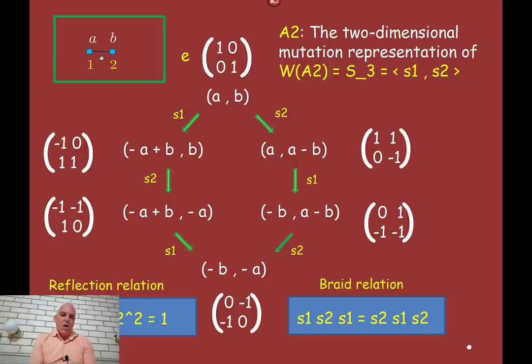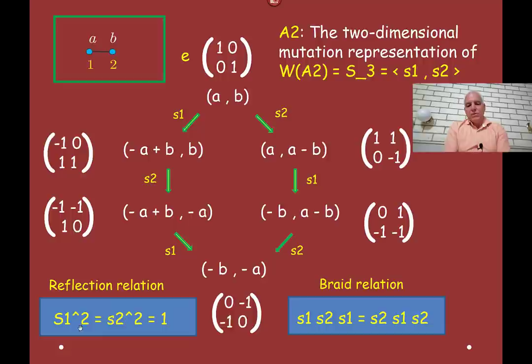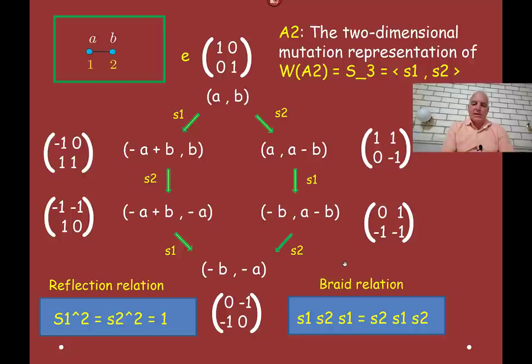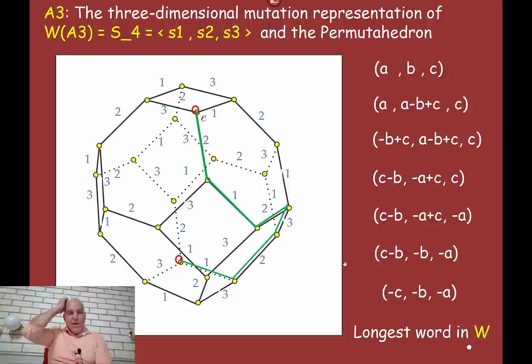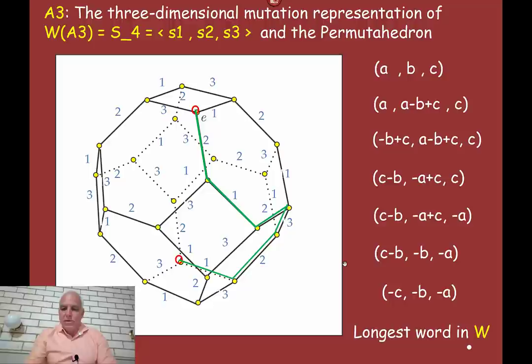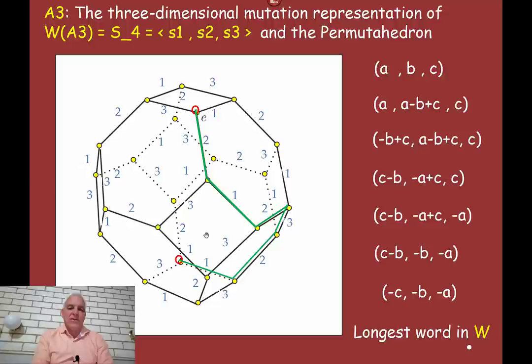In the very simple case of a graph with just two vertices, it's already quite interesting. You only have two mutations, s1 and s2, and they satisfy: they're both involutions (performing them twice gives the identity), and crucially they satisfy the braid relation — s1 s2 s1 equals s2 s1 s2. There's an interesting hexagonal configuration that appears when you analyze the algebra of these things. In three dimensions there's a more elaborate structure — we'll touch base with something called the permutahedron, a nice Archimedean solid, which has interesting connections with the algebra.